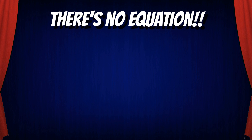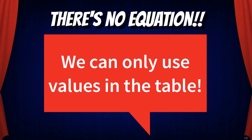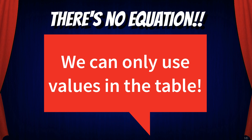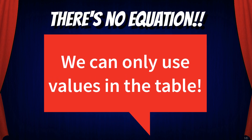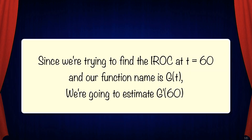Since we don't have an equation, we can only use values given to us in the table. So we're going to use some of the methods that we learned about in the last video — left, right, and symmetric — using only the values in the table. Since we're trying to find the IROC at 60 and our function name is g of t, we're going to be looking to estimate g prime of 60.